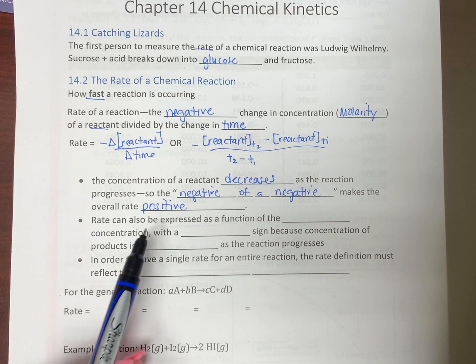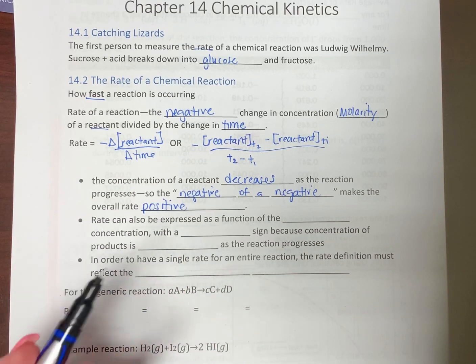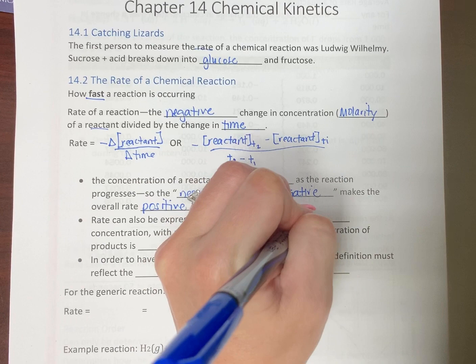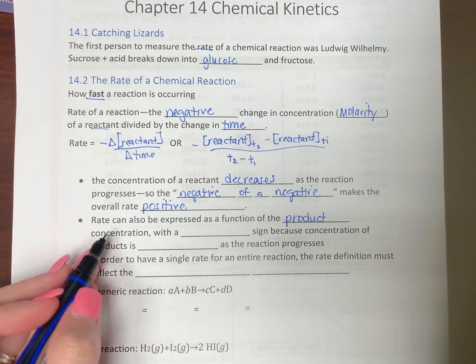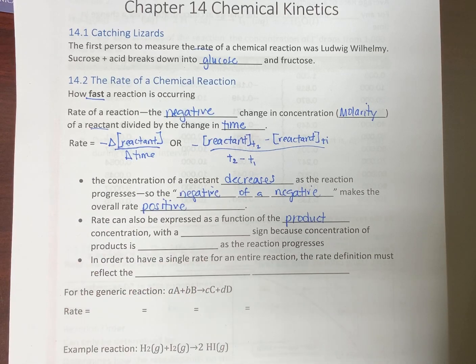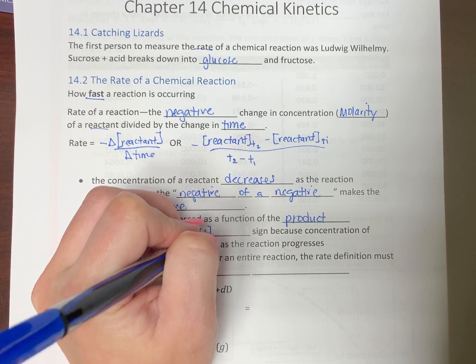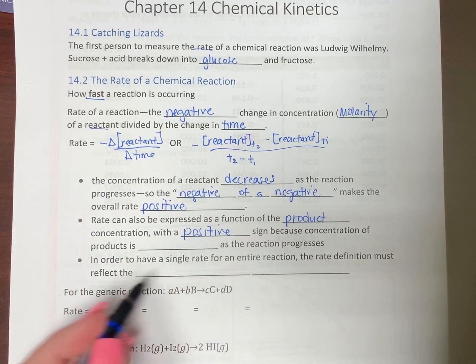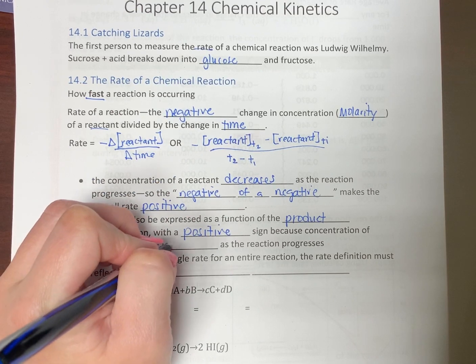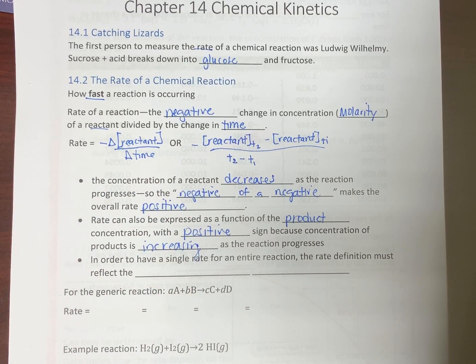The overall rate of the reaction should always be positive. If we're using our rate and we're expressing it as a function of concentration of one of the products, then as the reaction goes forward, you're getting more products.